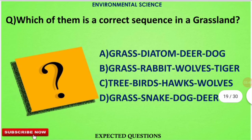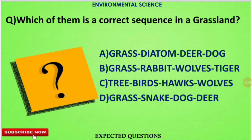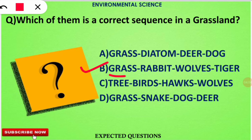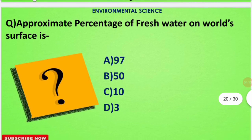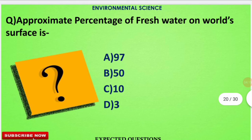The next question is: which of the following is the correct sequence in a grassland? The correct option will be option number B. In a grassland, grasses are the dominant species eaten by rabbits, followed by wolves and then tigers.